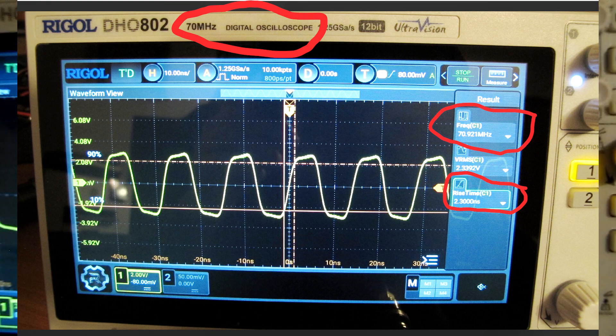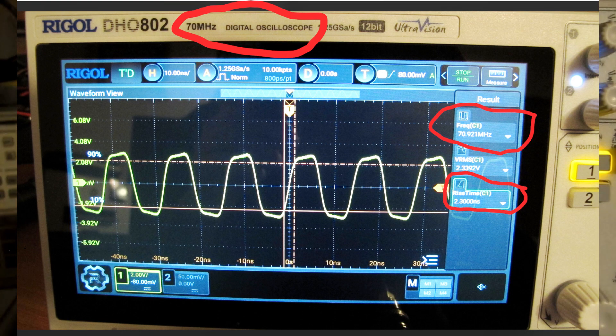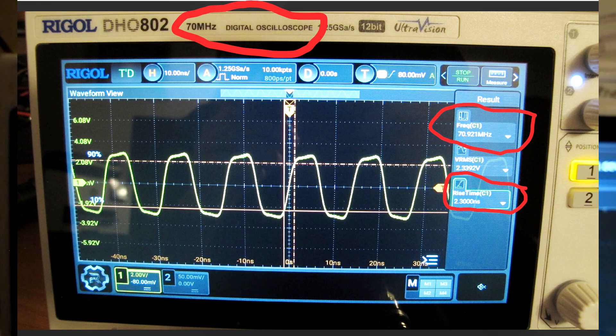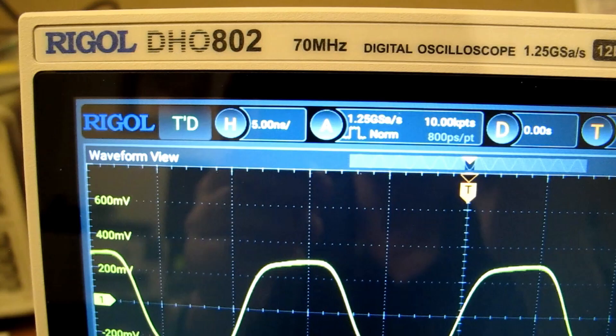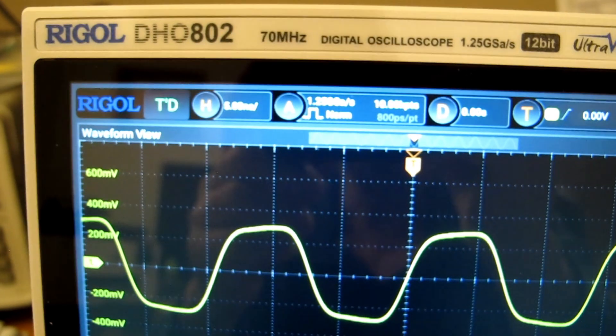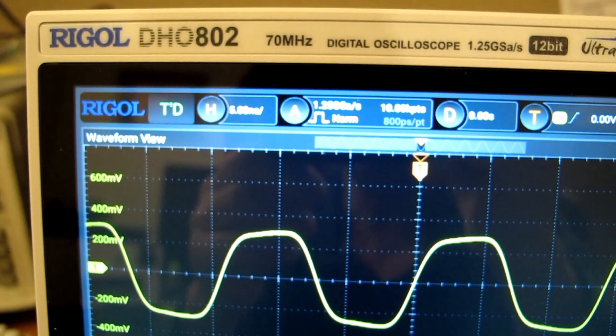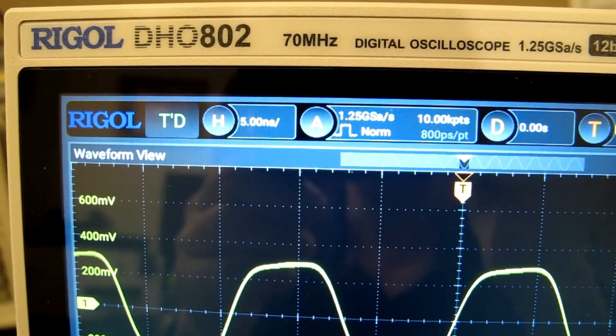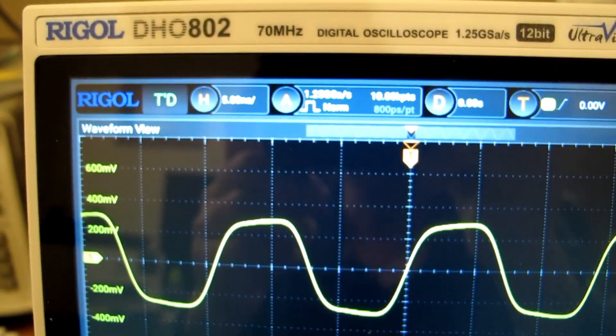That is comparable to a 125 megahertz scope, not a 70 megahertz scope. So this 70 megahertz Rigol scope DHO 802 is behaving like about a 125 megahertz scope here. This is amazing. This is great.